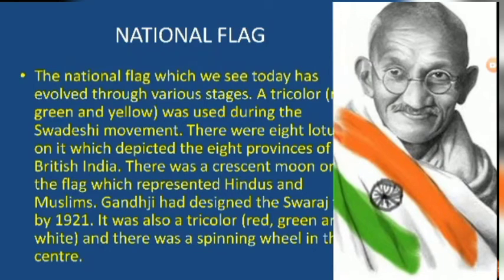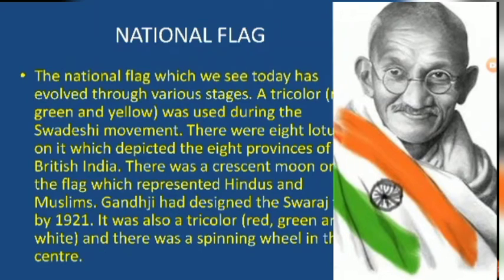The national flag we see today evolved through various stages. A tricolour of red, green, and yellow was used during the Swadeshi Movement, with eight lotuses representing the eight provinces of British India and a crescent moon representing Hindus and Muslims. By 1921, Gandhiji had designed the Swaraj flag — also a tricolour but in red, green, and white — with a spinning wheel in the centre.